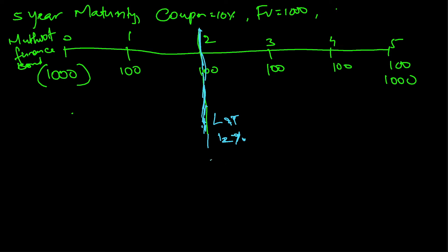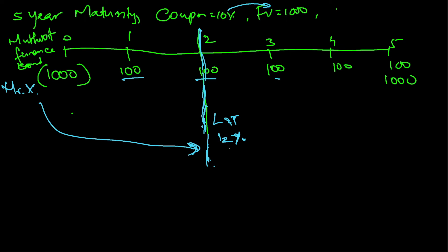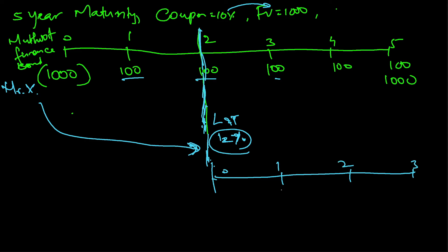At this time, Mr. X is holding the Motud Finance bond and he wants to sell it at the end of the second year — for whatever reason, maybe he needs money or he no longer likes this bond. The question is: who will be interested in buying his bond? Whoever buys Motud Finance's bond will be paid only 100 per year, which is 10% of 1000. But whoever buys the LNT bond will be paid 12%.